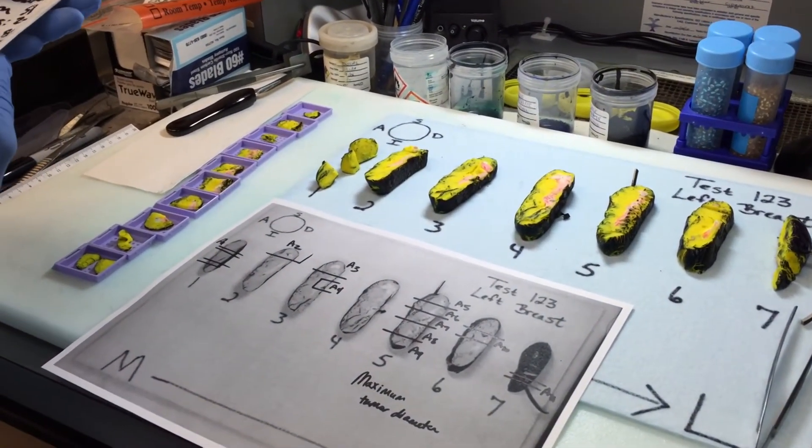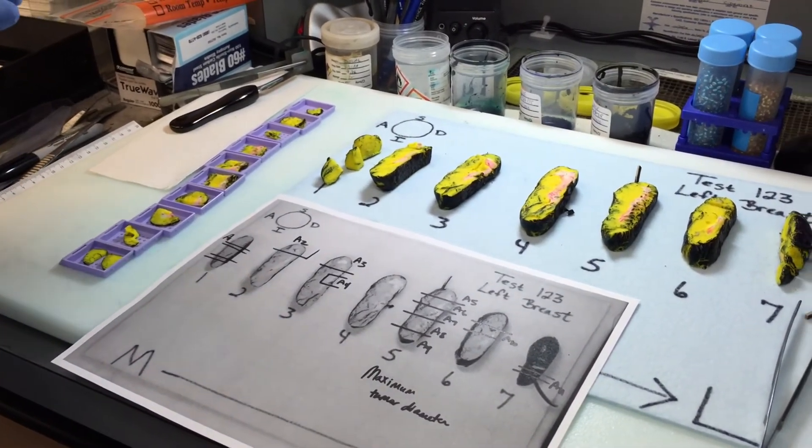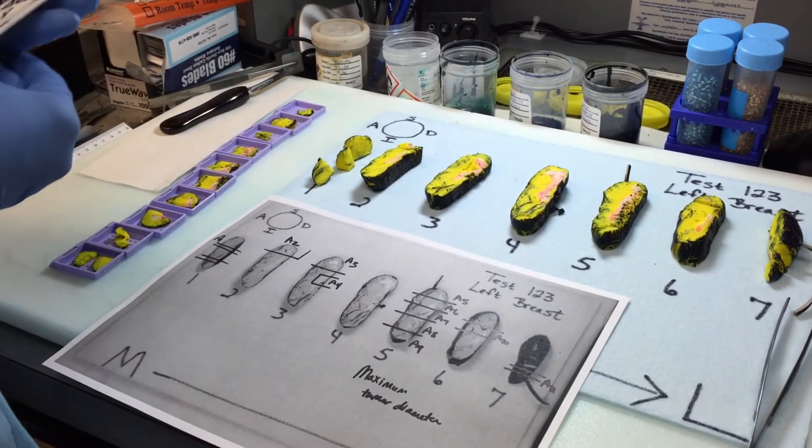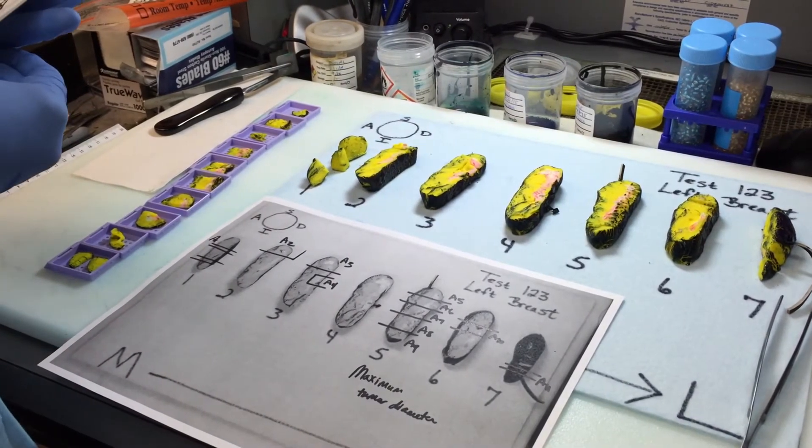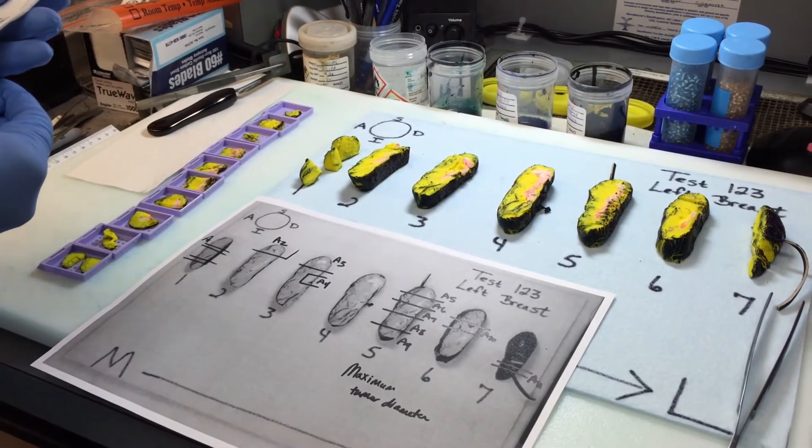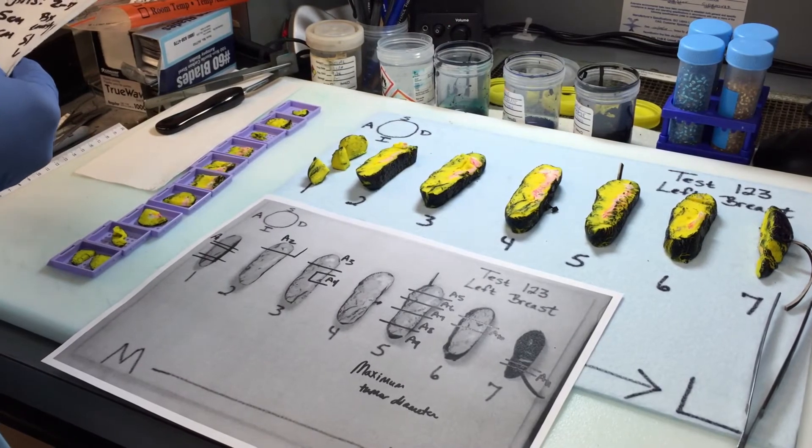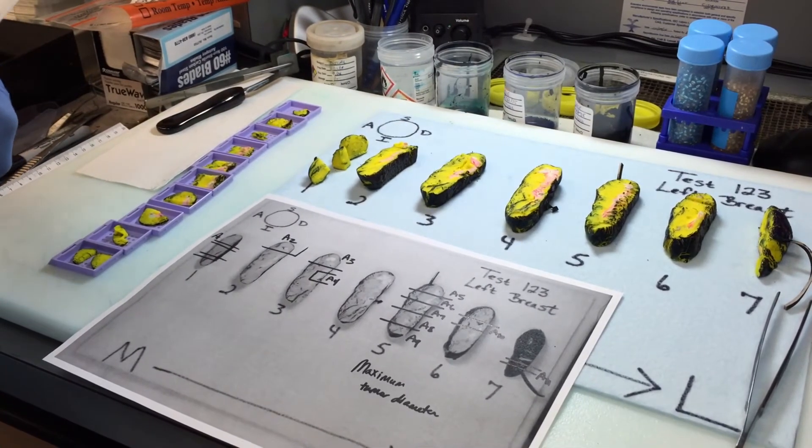The remaining breast parenchyma is yellow, fibroadipose tissue. In parentheses, the superior aspect is inked blue, the inferior is inked green, and the deep overlaid in black. Serially sectioned from medial to lateral in 7 reference slices. Representative sections in 11 caps.